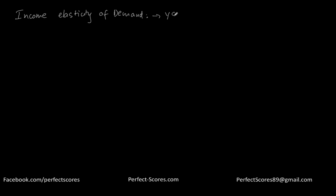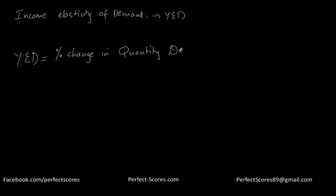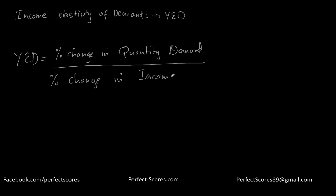Income elasticity of demand is denoted as YED. We usually denote income as Y, so this is YED. The mathematical definition of YED — the income elasticity of demand — is the percentage change in quantity demanded divided by the percentage change in income. Sorry, percentage change in income, not price — I'm so used to saying price.